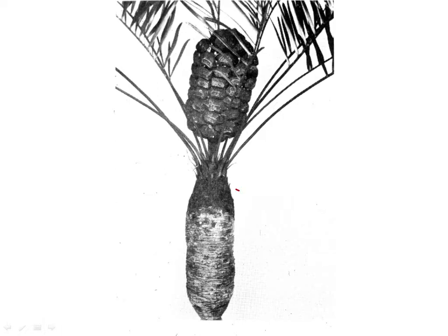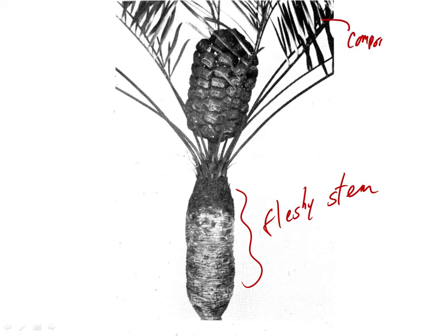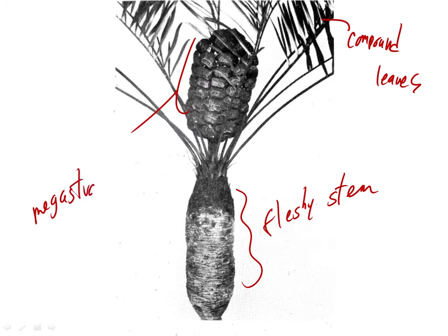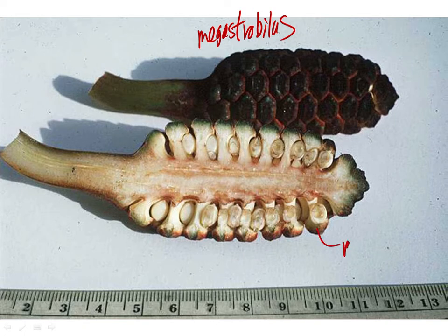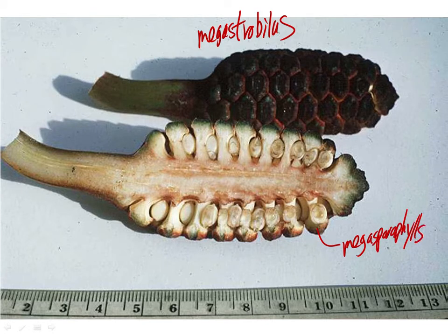Here's a female plant — the fleshy stem, the compound leaves, and this is the megastrobulus. Zamia again. Here's one cut open — the megastrobulus again with megasporophylls. Again, they're peltate and don't look very leaf-like. The ovules are born on the megasporophylls, and you can see the integument on the outside of the ovules.